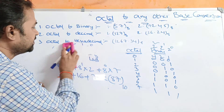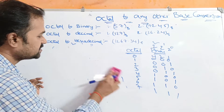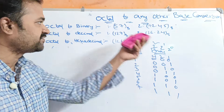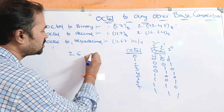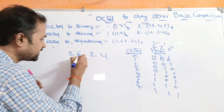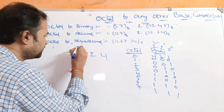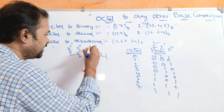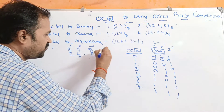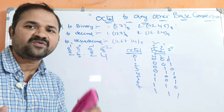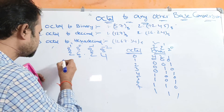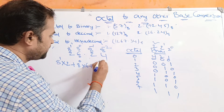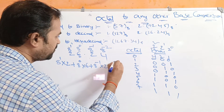Now let us solve the second example, which is a fractional number — a floating point number. After the dot we write 8 power minus 1, 8 power minus 2, and so on. The problem is 26.24 base 8. So we write 8¹ on top of 2, 8⁰ on top of 6, 8⁻¹ on top of the first fractional digit 2, and 8⁻² on top of 4. The expression is: 8¹ × 2 + 8⁰ × 6 + 8⁻¹ × 2 + 8⁻² × 4.